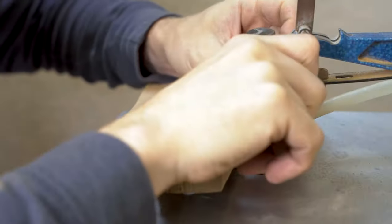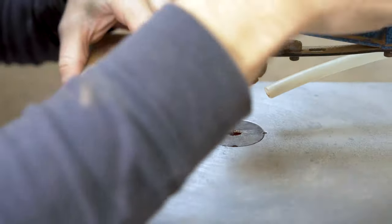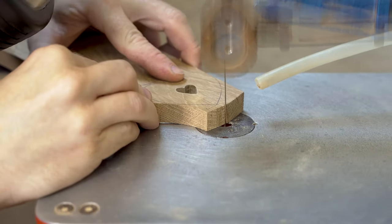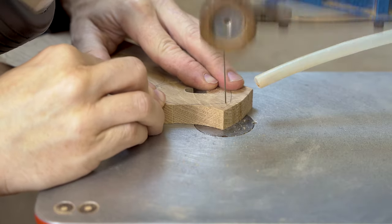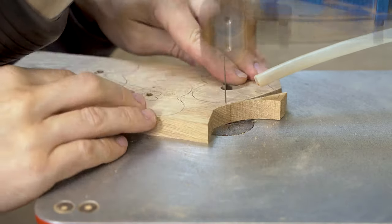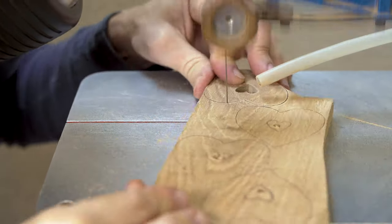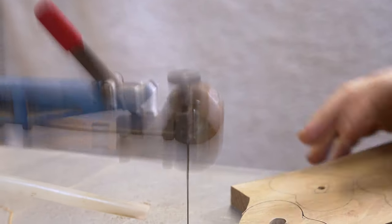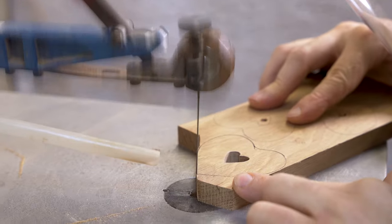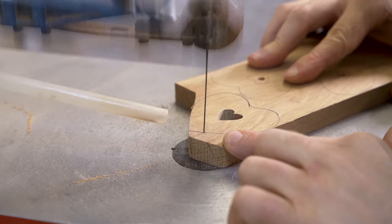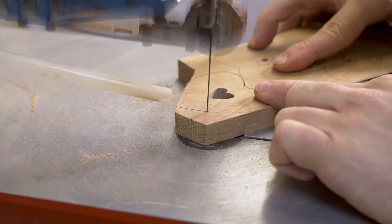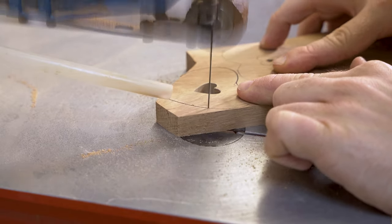If they last longer than the Nikwa speed blades then they would be superior because they work out cheaper to buy. Also then it gives you two options where they're just as good as one another. So if in your area, for example in the USA, if it's easier to get hold of Flying Dutchman reverse tooth blades, buy them. They're just as good as the Nikwa speed.